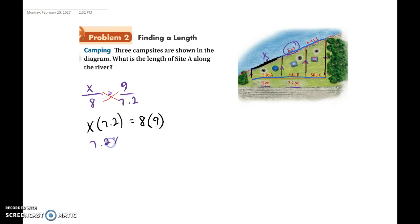X times 7.2 is 7.2X is equal to 72. Then we would divide each side by 7.2. Divide each side by 7.2, and we get that X is equal to 10. So that means the length of site A along the river is going to be 10 yards.